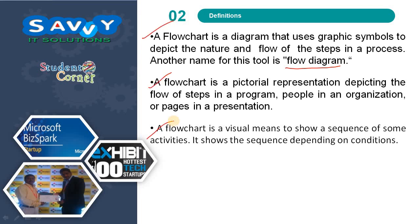A flowchart is a visual means to show a sequence of some activities. It shows the sequence depending on conditions. Very simply, a flowchart is a graphical or pictorial representation of an algorithm.